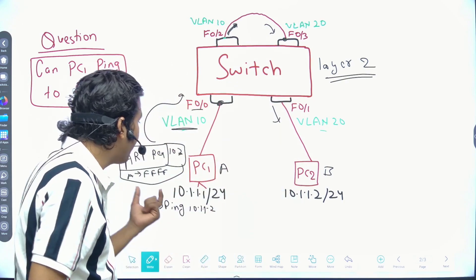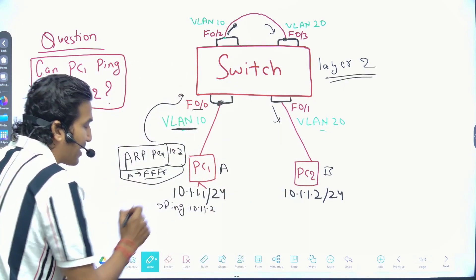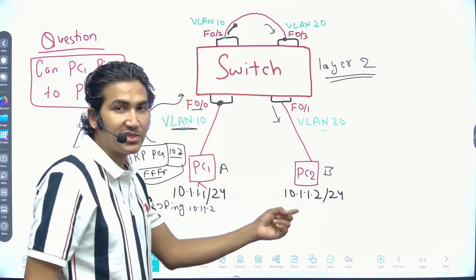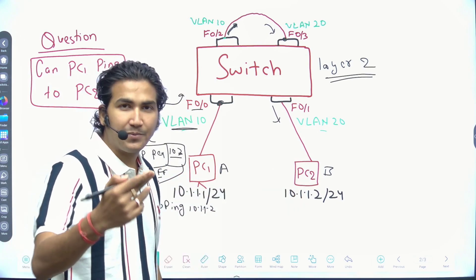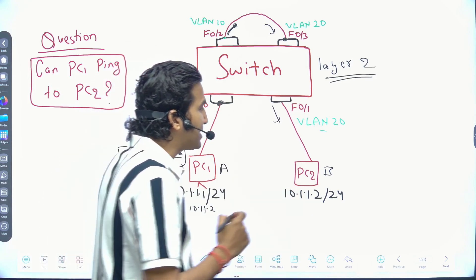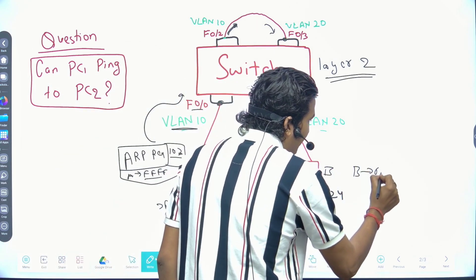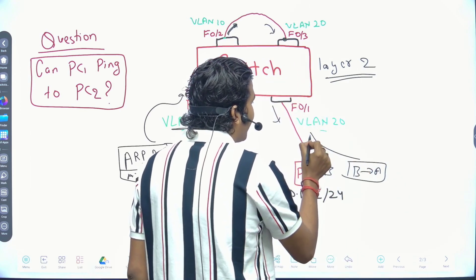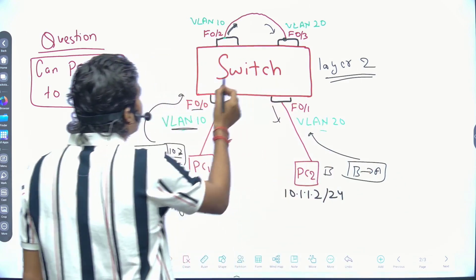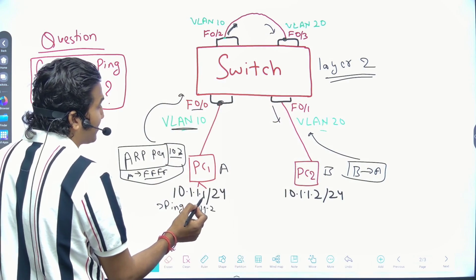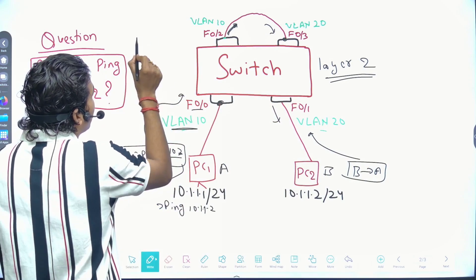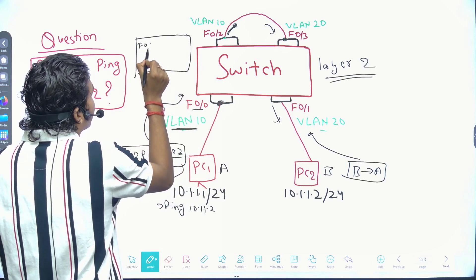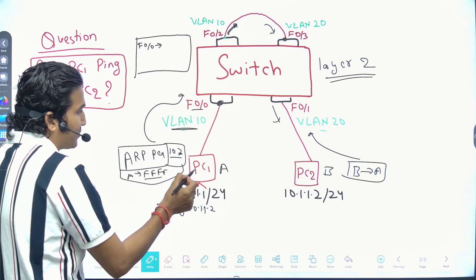When PC2 receives the ARP request, it checks the destination MAC — broadcast — and checks the target IP, which matches. PC2 will generate an ARP reply with source MAC B and destination MAC A, and forward it to the switch. When the switch receives the ARP request from PC1, it also makes an entry in its MAC address table: on interface 0/0, a device with MAC address A is connected.